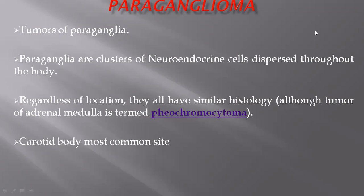The tumor or paraganglioma which arises from the adrenal medulla has a different terminology and is called pheochromocytoma, but it still has the similar type of histology and the similar type of staining pattern. Paraganglioma cells in majority are located around the big vessels in the body and around the autonomic nervous system.